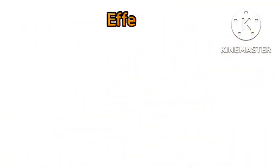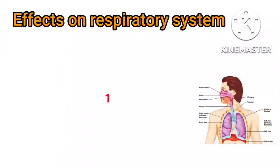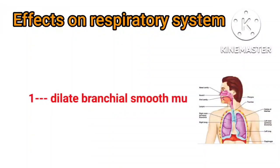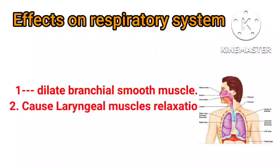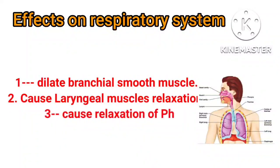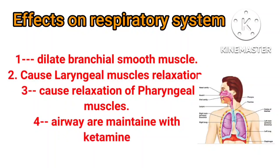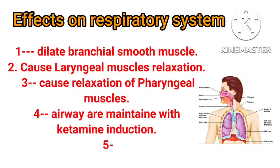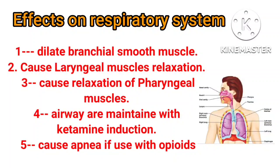Effects on the respiratory system: dilates bronchial smooth muscle, causes laryngeal muscle relaxation, causes relaxation of pharyngeal muscles, airway is maintained with ketamine induction. Causes apnea if used with opioids.